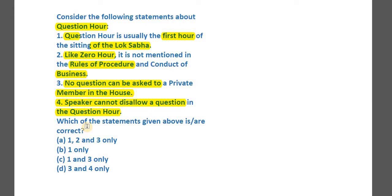Let's get on to the explanation. Even if we don't know the answer, let's read statement number four: the Speaker cannot disallow a question in the Question Hour. The Speaker is the presiding officer of the house — how could he or she not have the power to disallow a question? That's his job. So statement four is clearly wrong, and option D is eliminated.